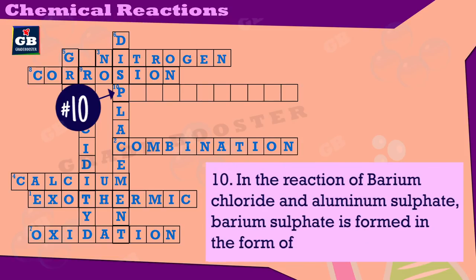In the reaction of barium chloride and aluminum sulfate, barium sulfate is formed in what form? Barium chloride aur barium sulfate ke beech hone wali reaction mein barium sulfate kis form mein forma hota hai? Answer: precipitate.